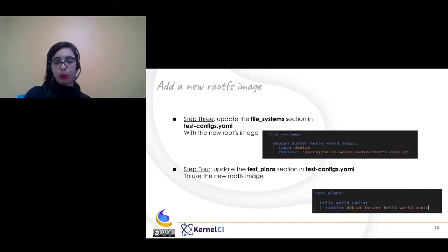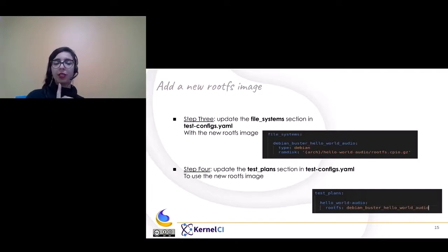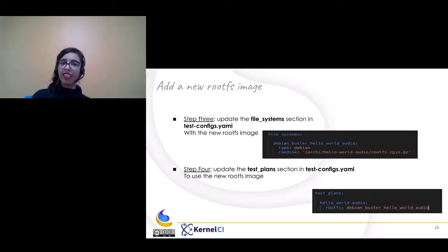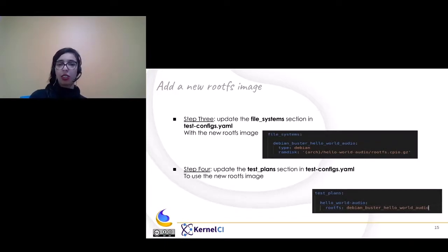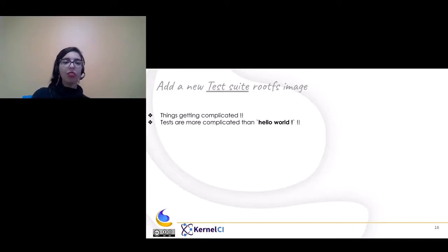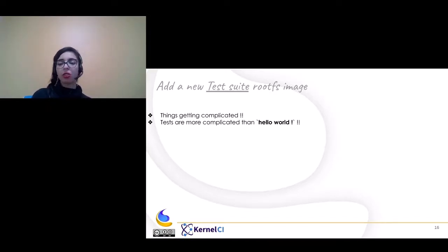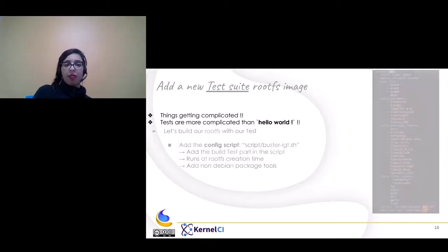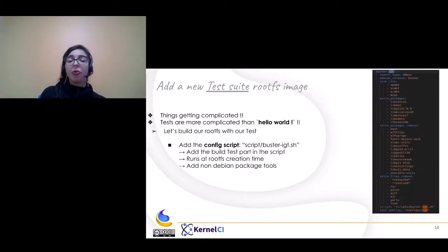That's it for this point. So until now you have seen three points: the first is adding a simple test plan, the second is customizing your rootfs image in the run section, and the third is creating a whole new rootfs image that is already customized. Now we move to adding a new test to a rootfs image — for more sophisticated tests that are more complicated than just a hello world. Let's build our rootfs with our test.